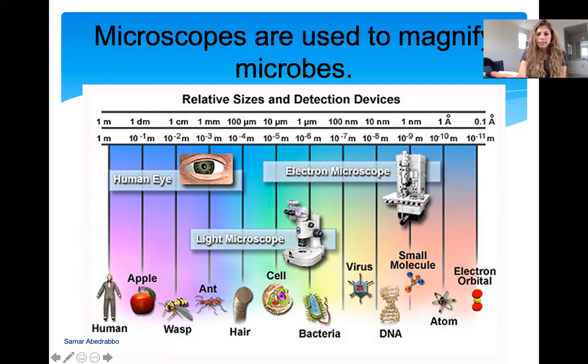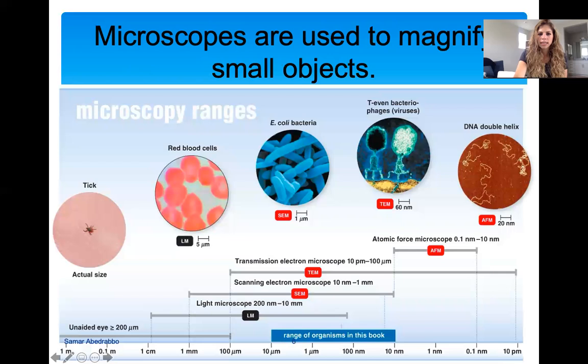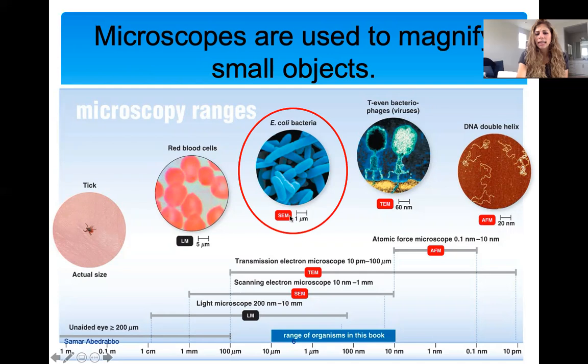Most bacteria are micrometers in length. If you want to see viruses — such as the HIV virus or SARS-CoV-2 which causes COVID-19 — you use electron microscopes. Electron microscopes are much fancier than light microscopes and they measure nanometer length. You use light microscopes to look at red blood cells and bacteria. If you've taken anatomy, you look at erythrocytes using a light microscope.